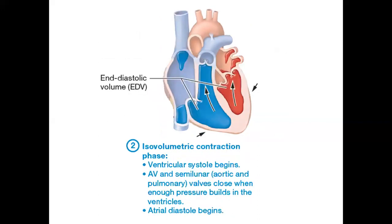Step two is the isovolumetric contraction phase. 'Iso' means equal and 'volumetric' refers to the amount of blood, so this means equal volume. Ventricular systole begins — the right ventricle starts to contract, building up pressure that causes the tricuspid valve to close. No more blood comes from the right atrium, but not enough pressure has been built to push open the semilunar valve in the pulmonary trunk, so volume hasn't changed yet.